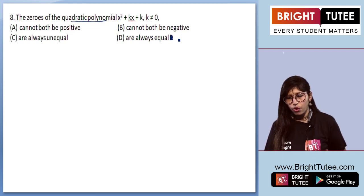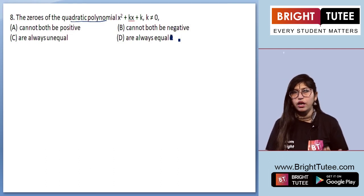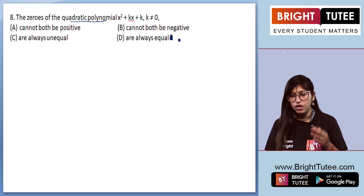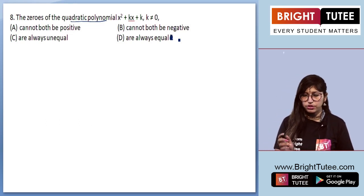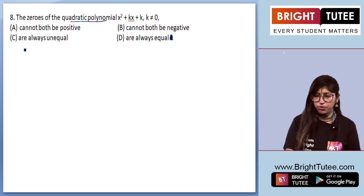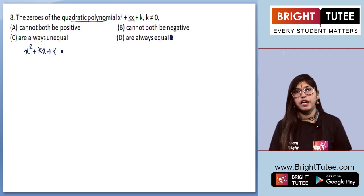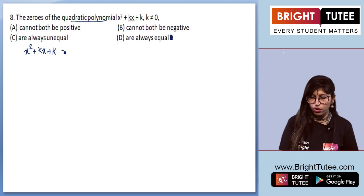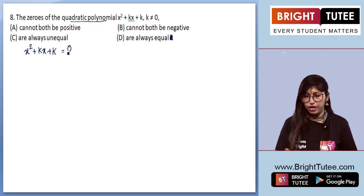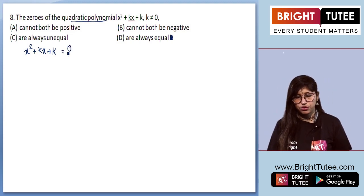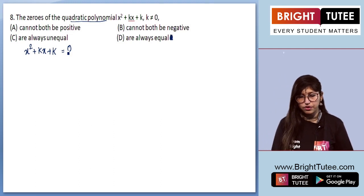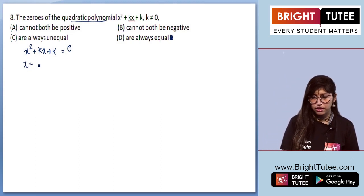So now let's start with our question: the zeros of the quadratic polynomial — cannot both be positive, cannot both be negative, are always unequal, or are always equal. We have the equation x² + kx + k, and to find the zeros we need to equate it to zero.